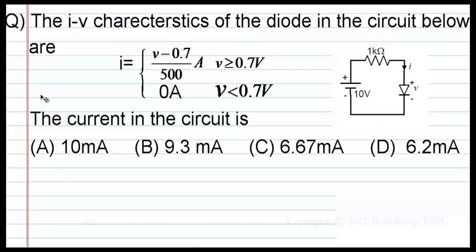The IV characteristics of the diode in the circuit below are I equal to V minus 0.7 by 500 ampere when V is greater than 0.7 volt, and it is 0 when V is less than 0.7 volt. V is across the diode. The current in the circuit is: